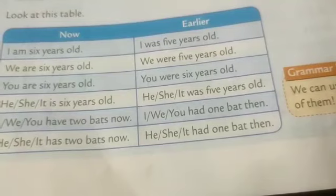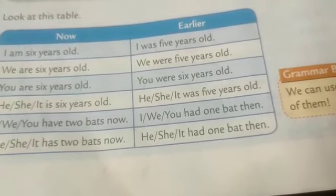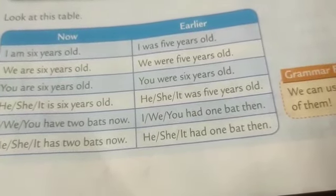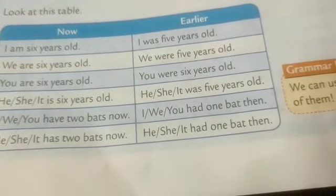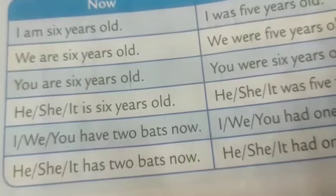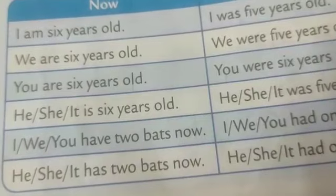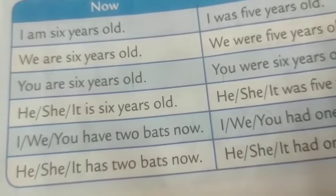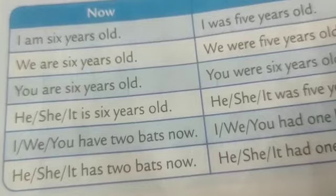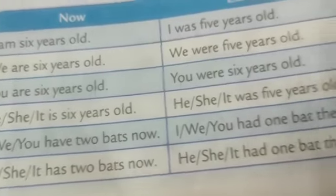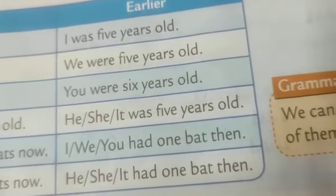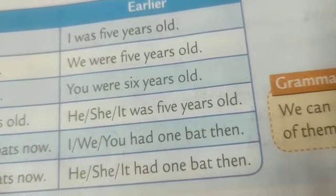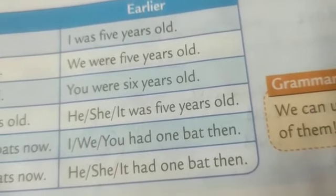He, she, it has 2 bats now; he, she, it had 1 bat then. We use am, is, are, has, and have to show the present time. Was, were, and had are used to show the past — earlier — time.